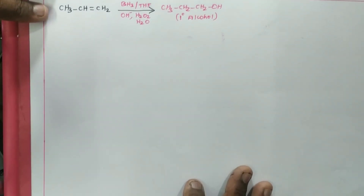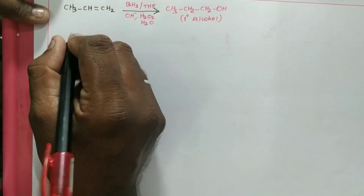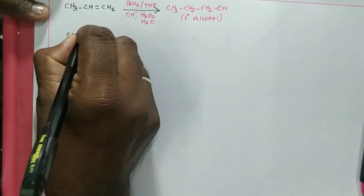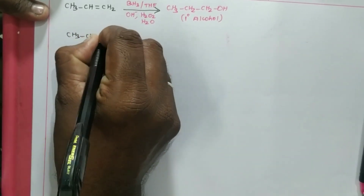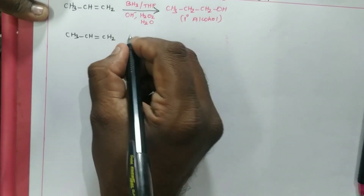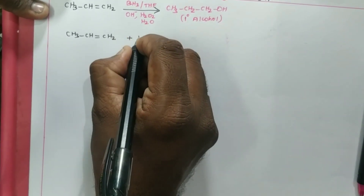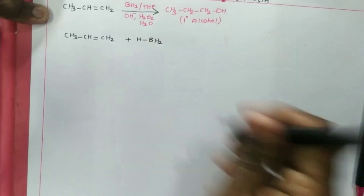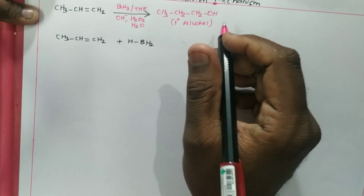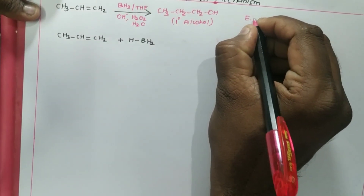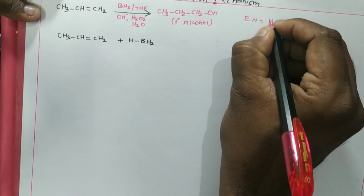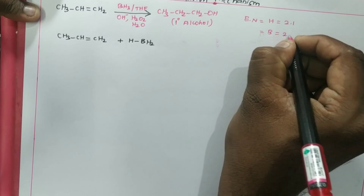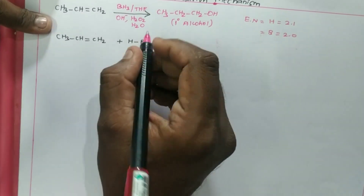Let's look at the mechanism. We take propene: CH3-CH=CH2, and this is going to react with borane, written as HBH2. As we know, the electronegativity of hydrogen is 2.1, but the electronegativity of boron is only 2.0.